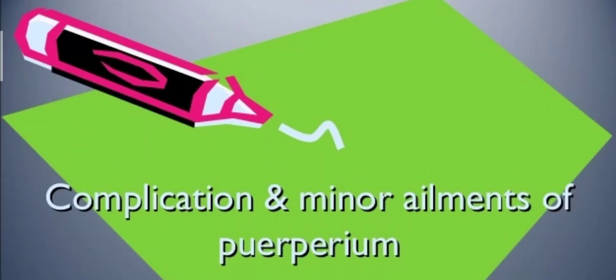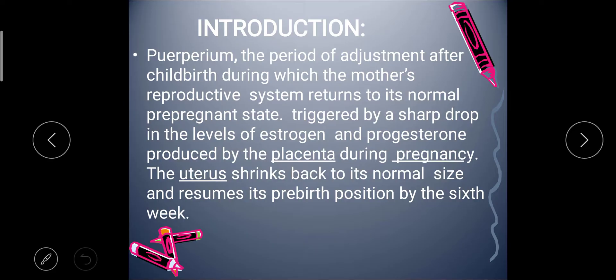Hello everyone. Today's class we are going to discuss about complications of puerperium and minor elements of puerperium. Puerperium means the postnatal period, which comes under unit 10. We'll start with the first complication and minor elements, starting with introduction. Puerperium is the period of adjustment after childbirth during which the mother's reproductive system returns to its normal pre-pregnant state, triggered by a sharp drop in the level of estrogen and progesterone produced by the placenta during pregnancy.